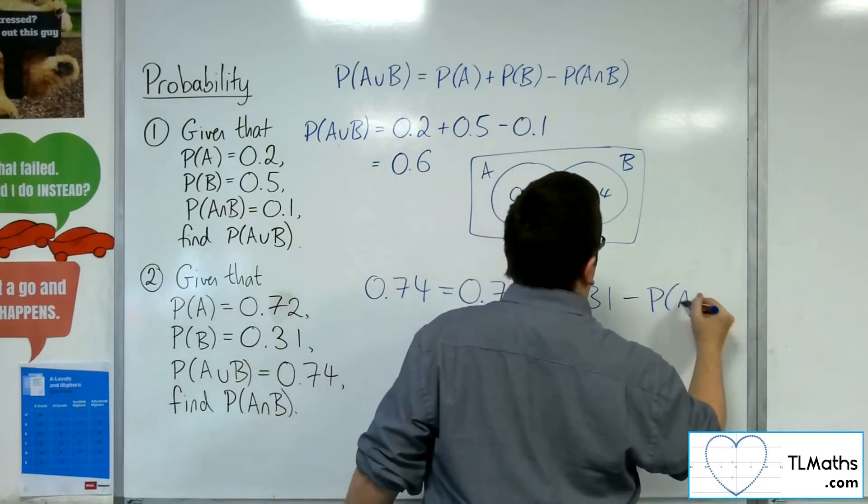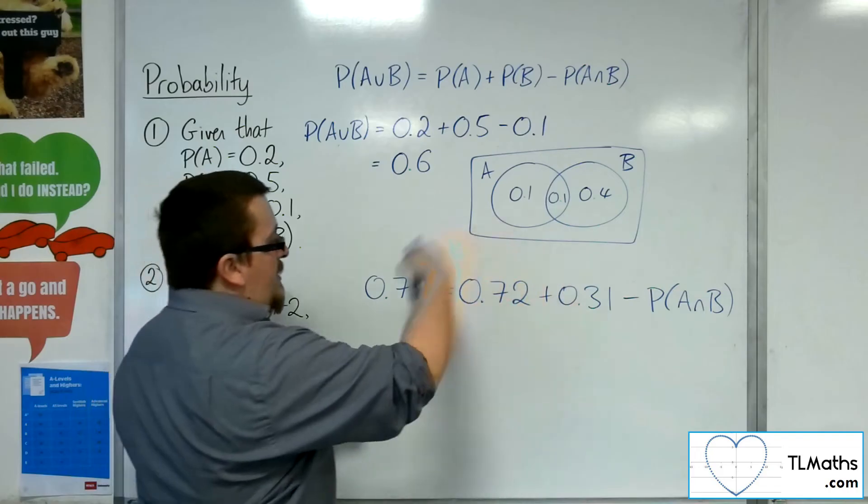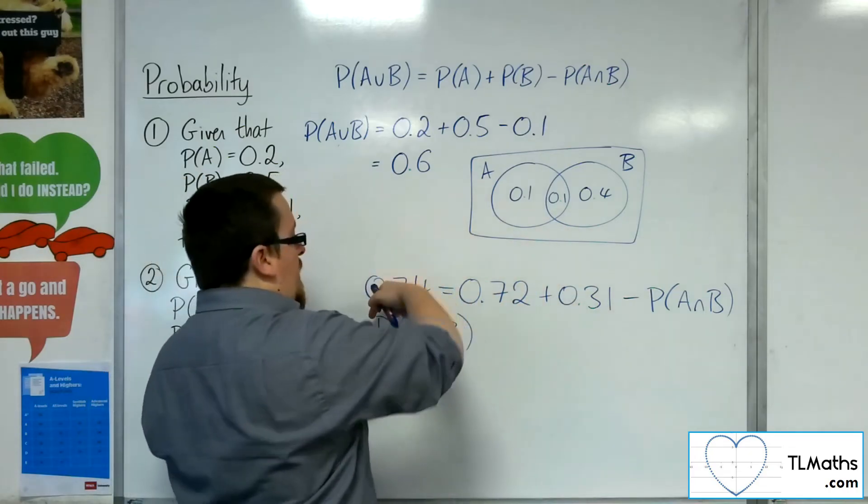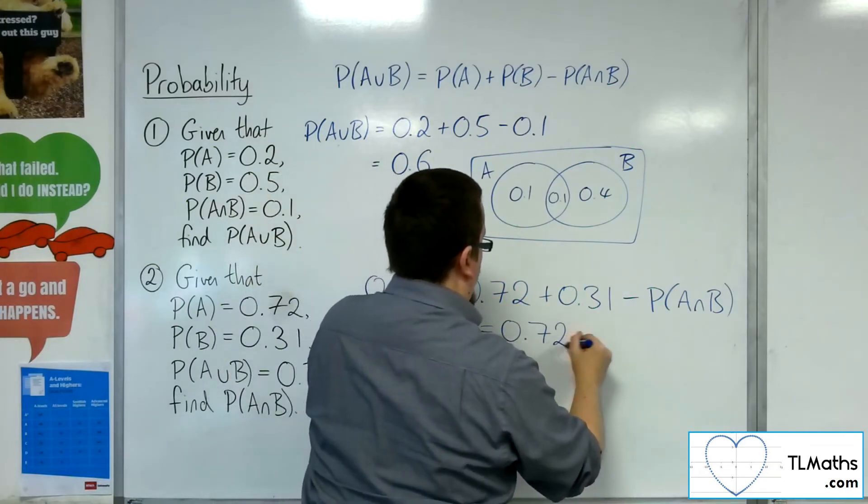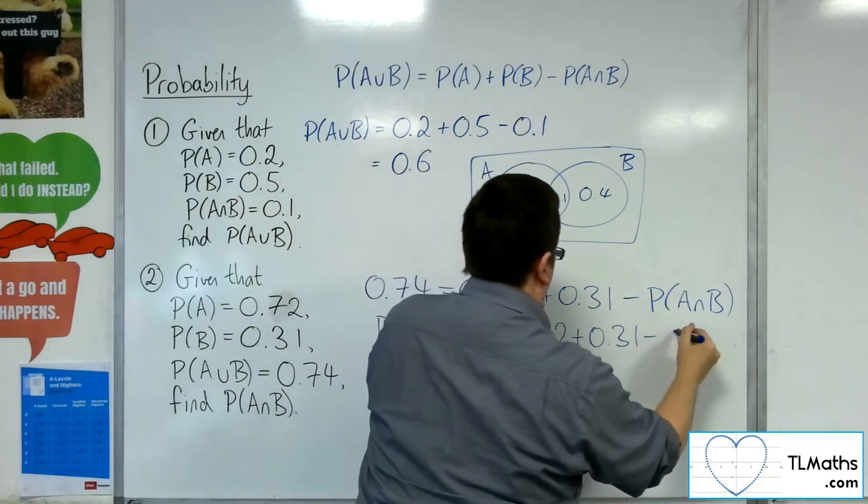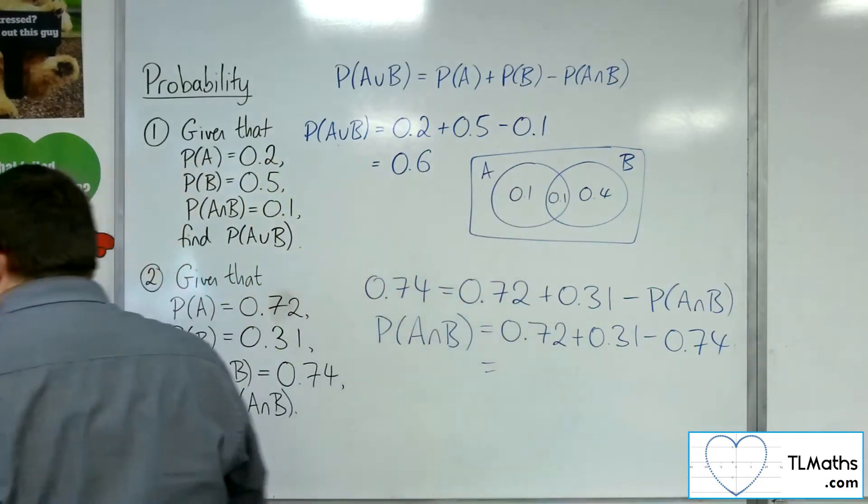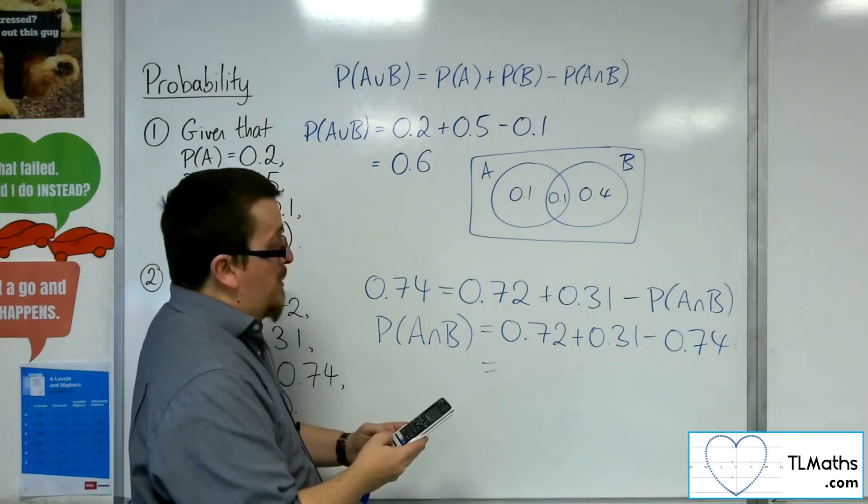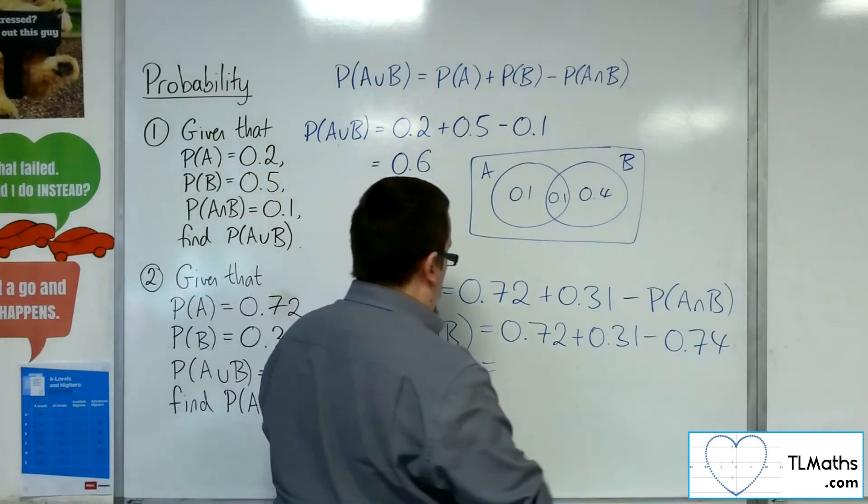But I don't have that intersection. That's the bit that I want to find. So if I add the intersection to both sides to move it to the left-hand side, and I can subtract the 0.74 just by rearranging, then we get this. So 0.72 plus 0.31 take away 0.74 gets me 0.29.